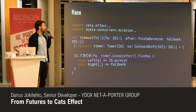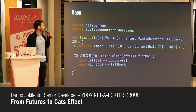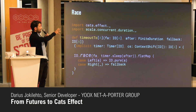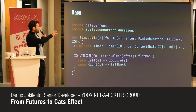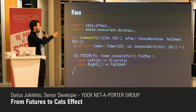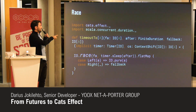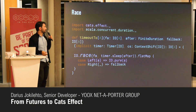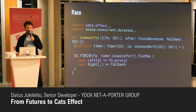IO has a function called race. This example is from the Cats Effect documentation. You simply pass it two IOs, and the first one that completes will cancel the other one. So you don't have to wait for them both to finish, which makes it a little bit more efficient.